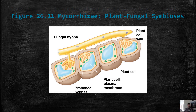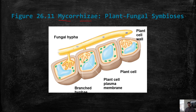This relationship is called mycorrhizal association — mycorrhizae. 'Myco' means fungus and 'rhizae' means roots. These are associations of fungi with roots. In some cases the fungi can actually go into the plant roots — not eating them, just receiving sugars from those roots — and they provide water and minerals to help the plants survive.